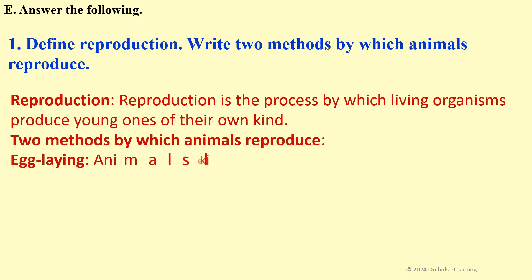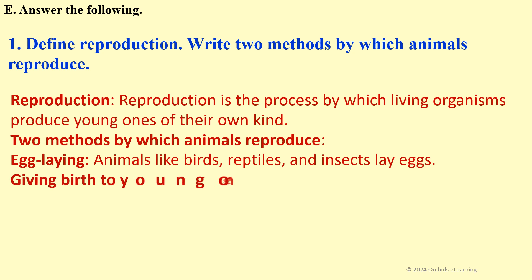Egg-laying: Animals like birds, reptiles, and insects lay eggs. Giving birth to young ones: Animals like mammals give birth to live babies.